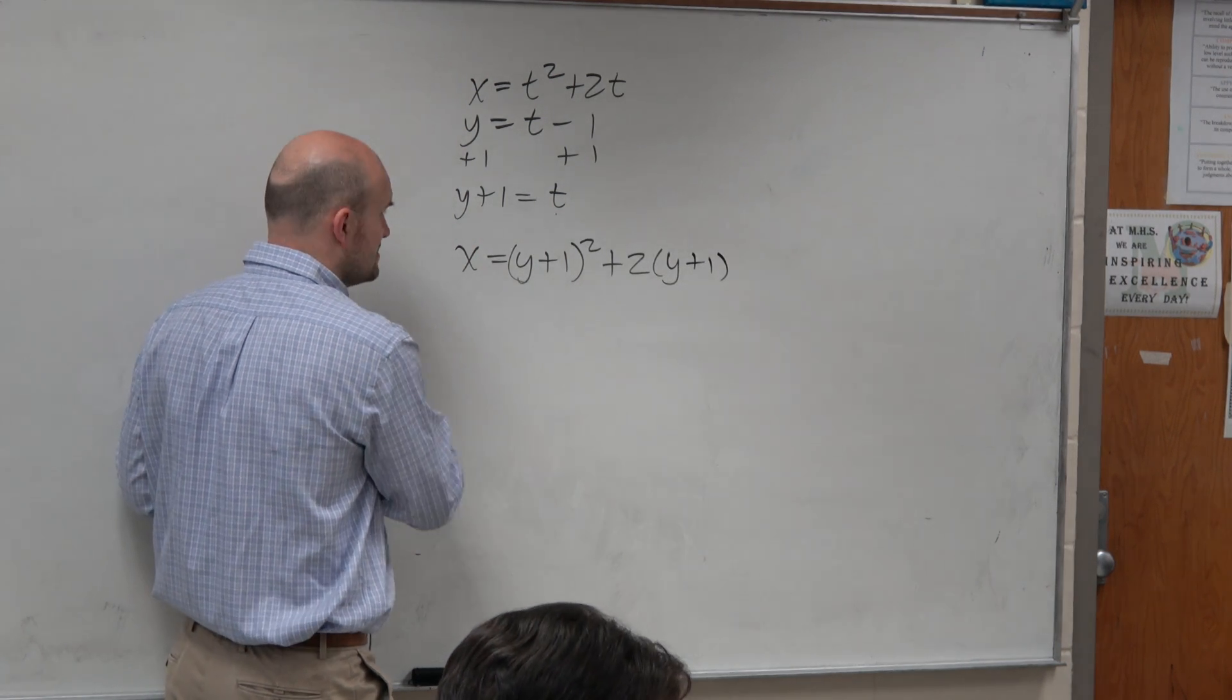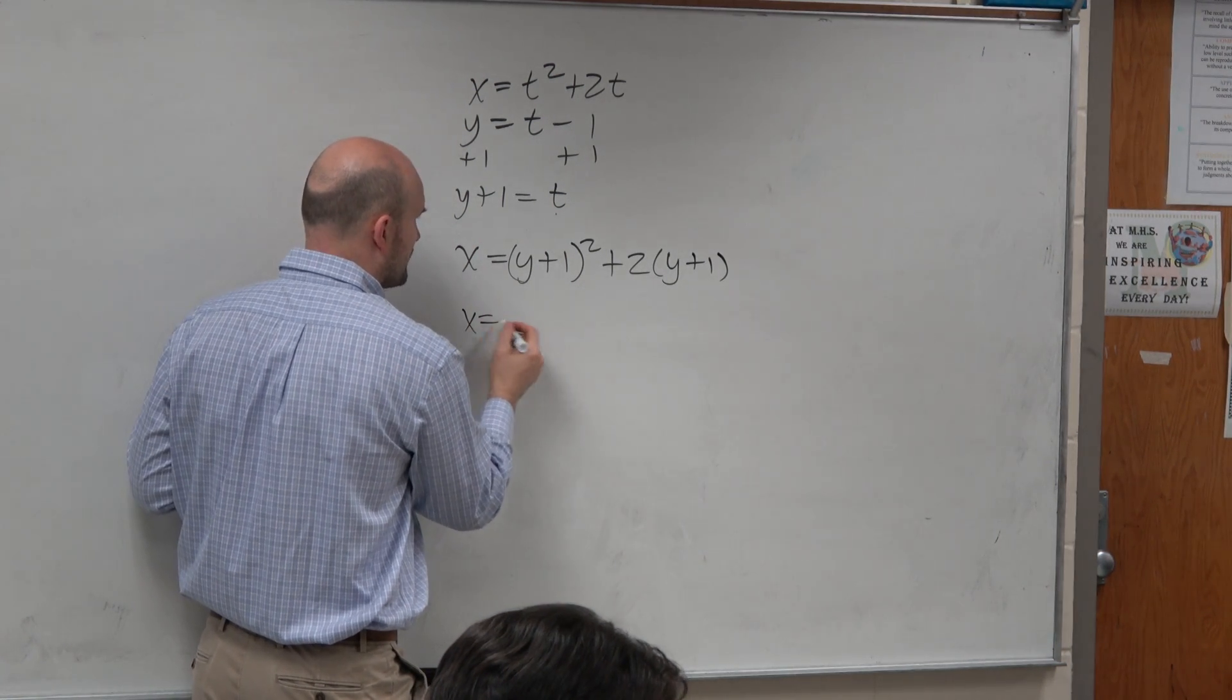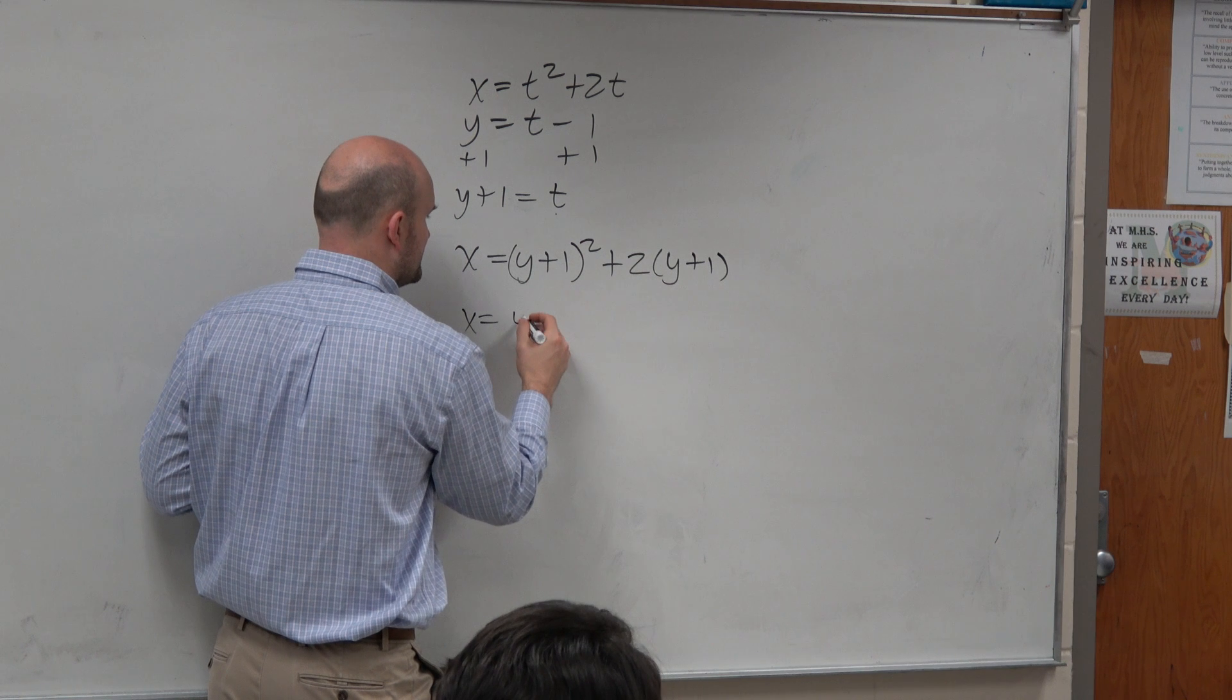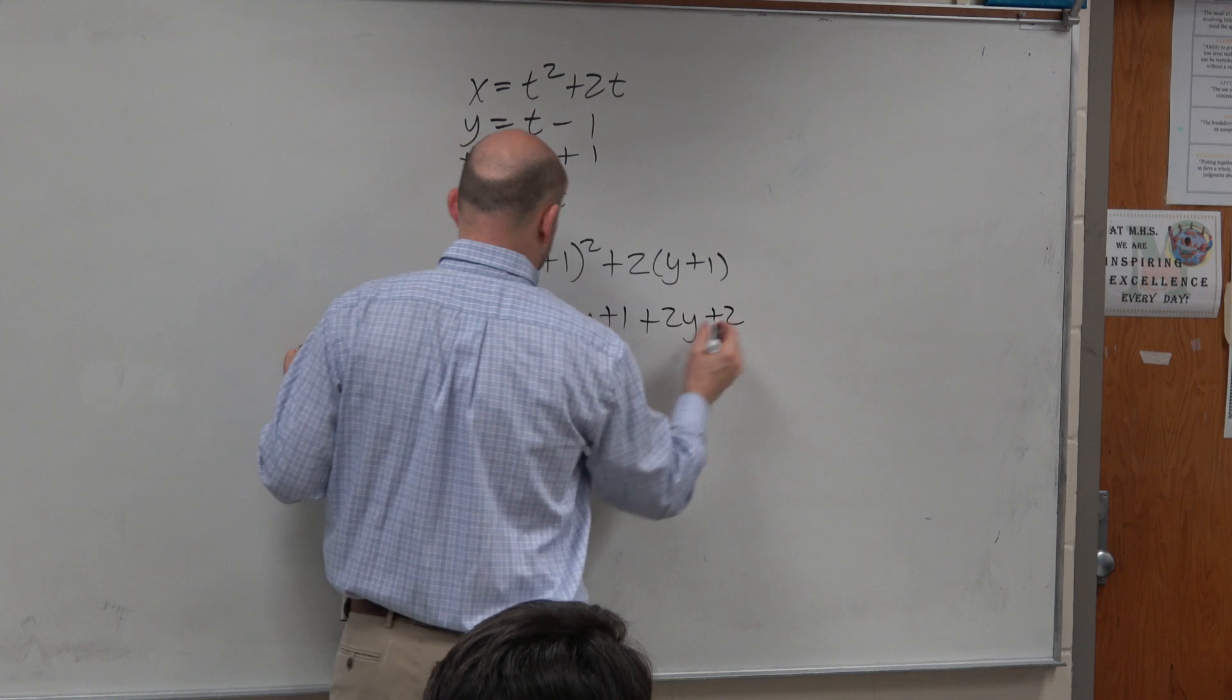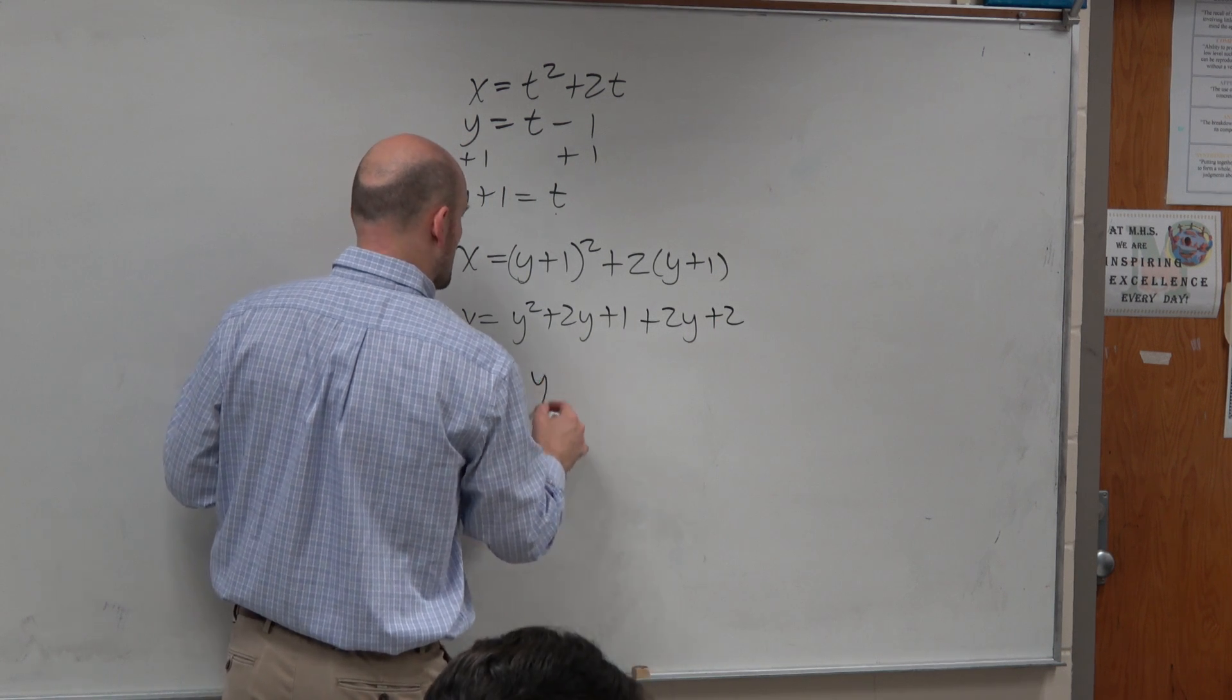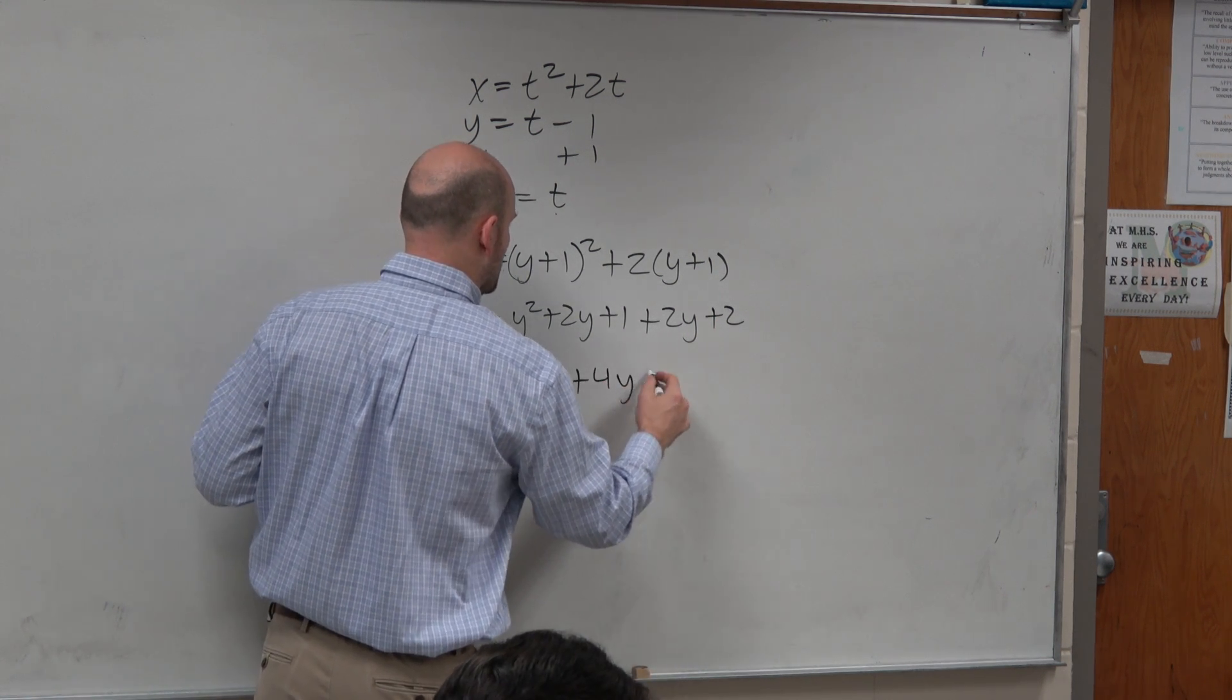Now, we could simplify this. But hopefully, you guys already recognize, if we want to distribute this, you do y squared plus 2y plus 1 plus 2y plus 2. And you could say x equals y squared plus 4y plus 3.